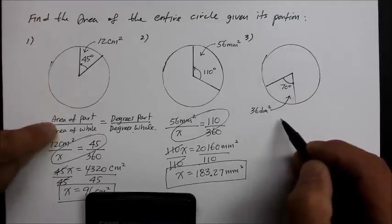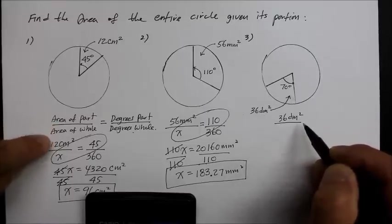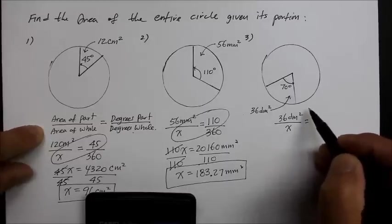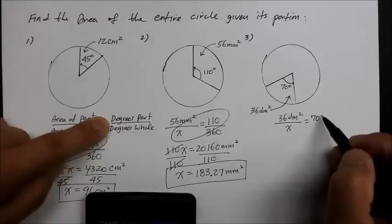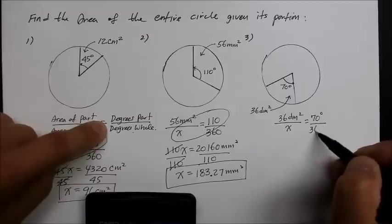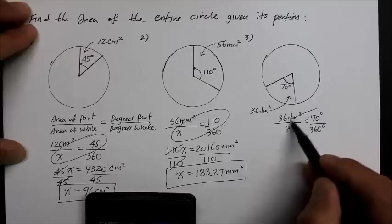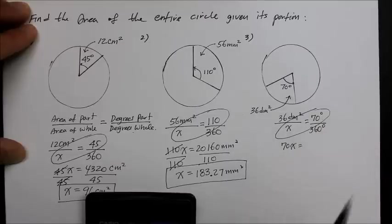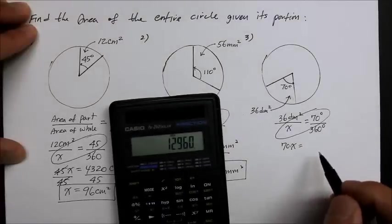So, we get area of part, which is 36 decimeters square, over the area of the whole, which we do not know, because it's x. And that's just equal to degrees of the part, which is given at 70, over the degrees of the whole, which is understood as 360 degrees. Now, we're going to cross multiply with the x term first. So, x times 70 is 70x. And 36 times 360, so we go 36 times 360, that's going to be 12,960.